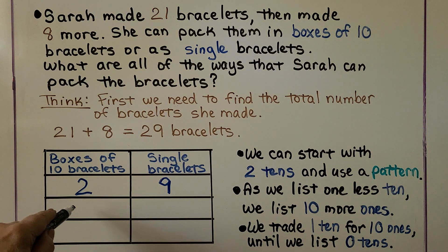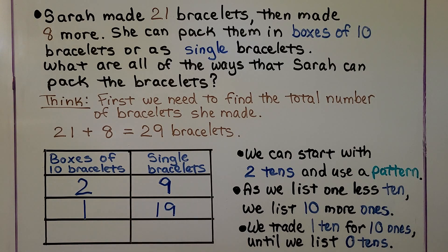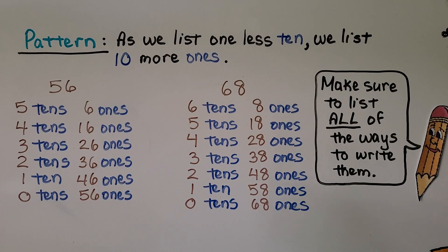1 less 10, we would have 1 box of 10. And 10 more ones would be 19 single bracelets. We trade 1 ten for 10 ones until we list 0 tens. This would be 10 more ones than 19. It would be 29 ones. So here's our pattern. As we list 1 less 10, we list 10 more ones.